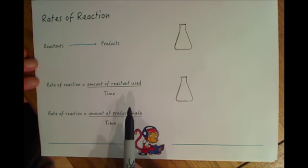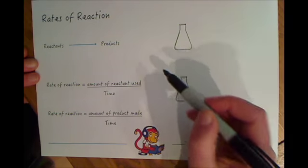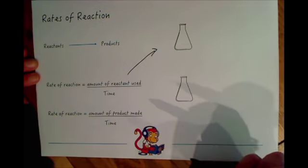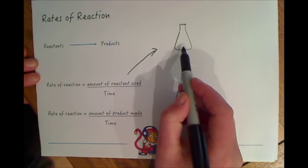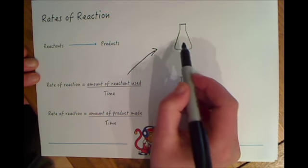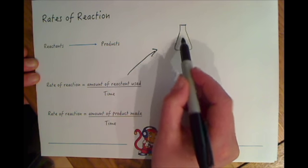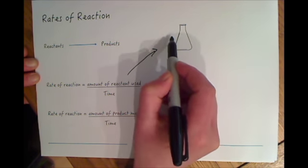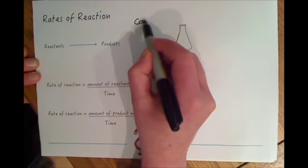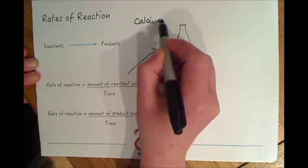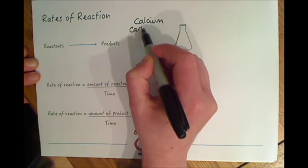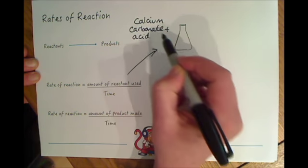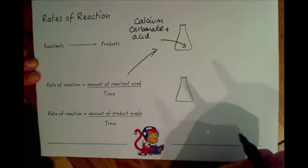Let's think about how these could be looked at experimentally. First of all, if we looked at the amount of reactant used up over time, you can imagine a situation whereby you've got your reactants in a conical flask. Let's put this in a scenario—if we had something like calcium carbonate and acid in our conical flask.